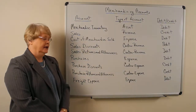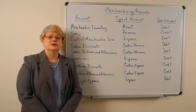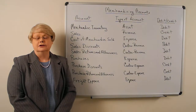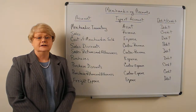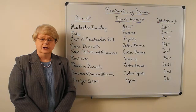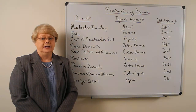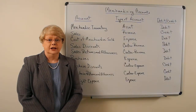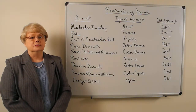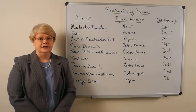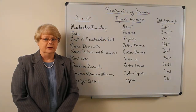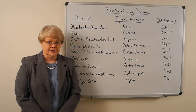Also, we might have some returns that our customer makes, or we might give an allowance for some reason. If this is done, we're going to reduce sales again, but not directly, but through the contra account sales returns and allowances. These two accounts will reduce sales down to net sales on the income statement for a merchandising company.